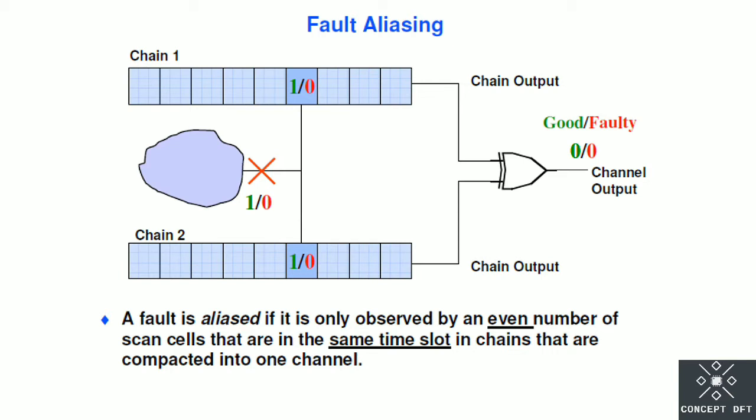Here in this diagram you can see there are two scan chains, scan chain 1 and scan chain 2. In between that one circuit disturbance is there, where one value is there which is written in green that is correct value and one faulty value is there that is zero value. Because of the circuit disturbance these values are present in scan chain 1 as well as scan chain 2.